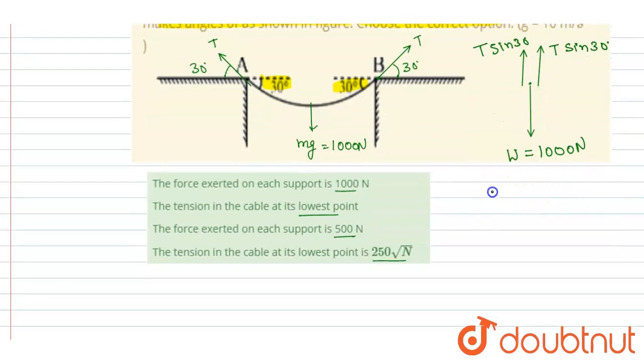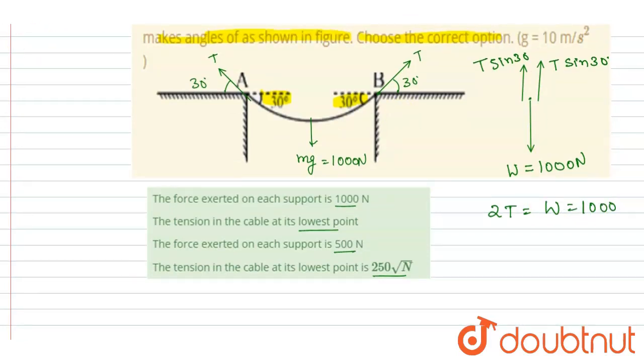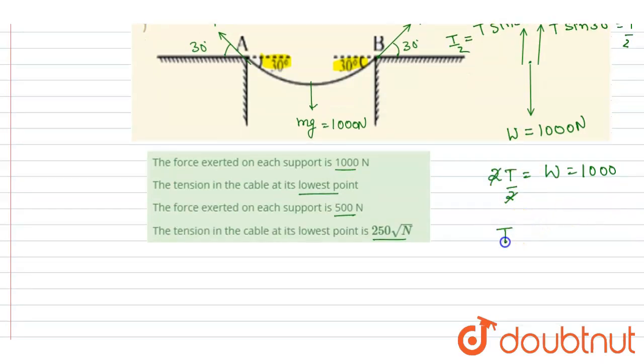So 2T is equals to W, that is 1000. If you see here, this is T/2, this is also T/2, so I wrote here 2T/2, that is T. From here I got the tension is equals to 1000 newtons.